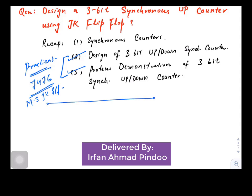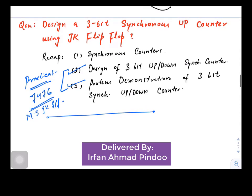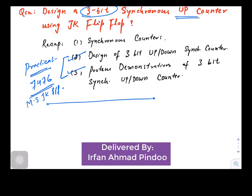Now we will start the solution of this given problem where we have been asked to design a synchronous up counter using three bits. We know if we have to use number of bits as three, then the number of states are 2 to the power n, that is 2 to the power 3, which makes it eight.